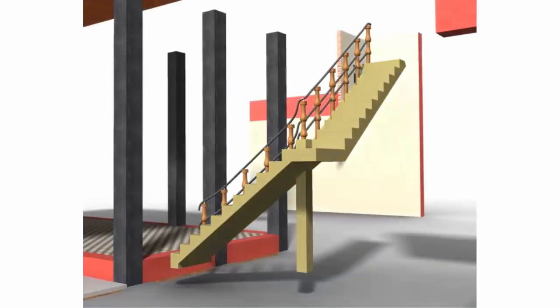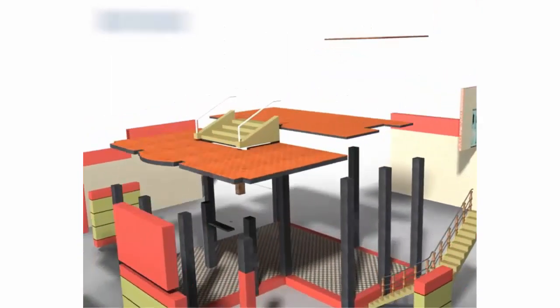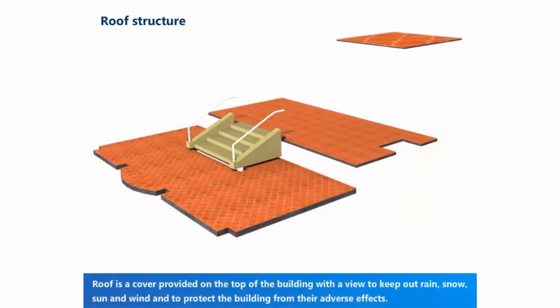Roof structure. Roof is a cover provided on the top of the building with a view to keep out rain, snow, sun and wind and to protect the building from their adverse effects.